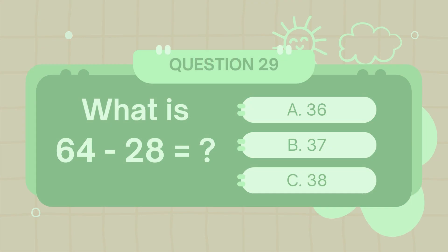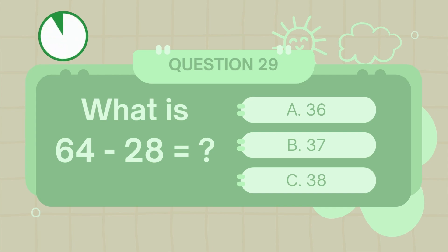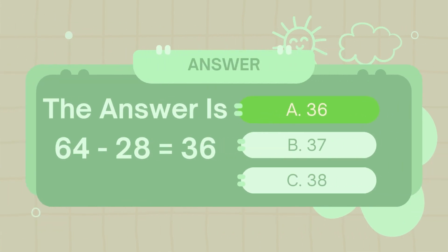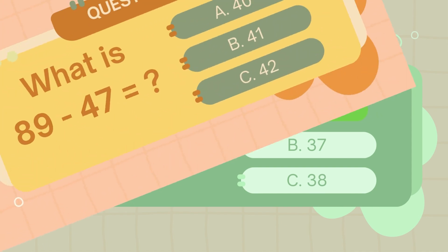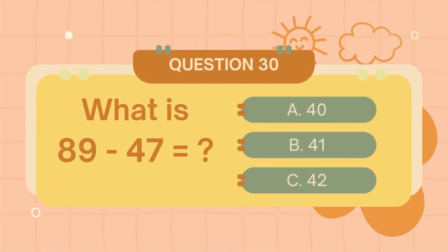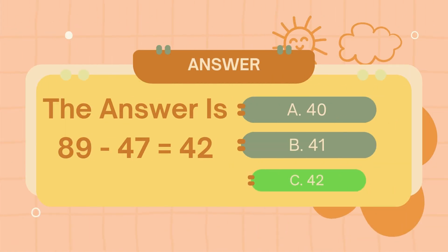What is 64 minus 28? The answer is 36. What is 89 minus 47? The answer is 42.